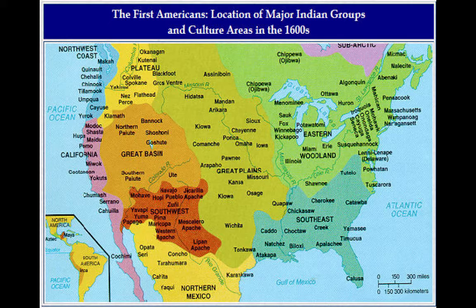Students don't have to know where every single tribe is — they need to know the regions, and have them know the descriptions of the regions in regards to the environment and geography. Talk about why these regions are geographically distinct and get into that, because geography and environment is a very important theme when discussing pre-Columbian civilizations.